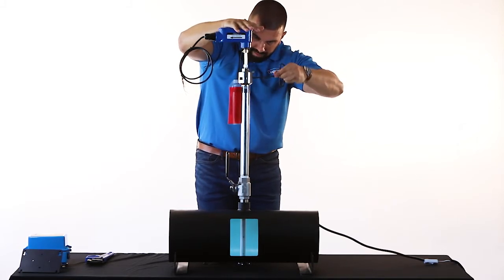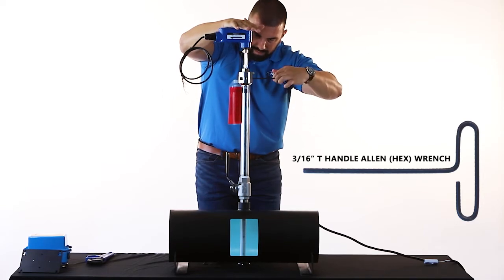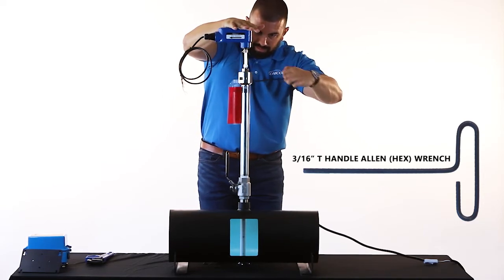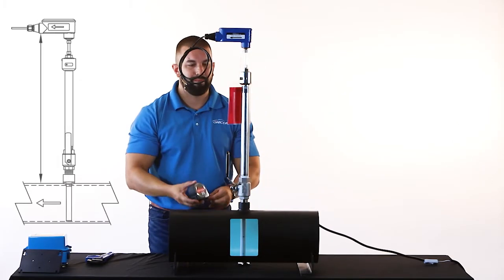While holding it in place, use the 3/16 inch T-handle Allen wrench to tighten the stem locking collar. Once it has been tightened, the downward force on the flow sensor can be removed and the locking collar will keep the sensor in place.